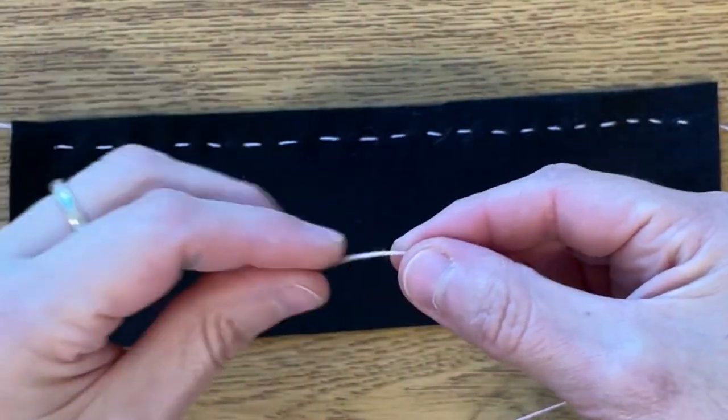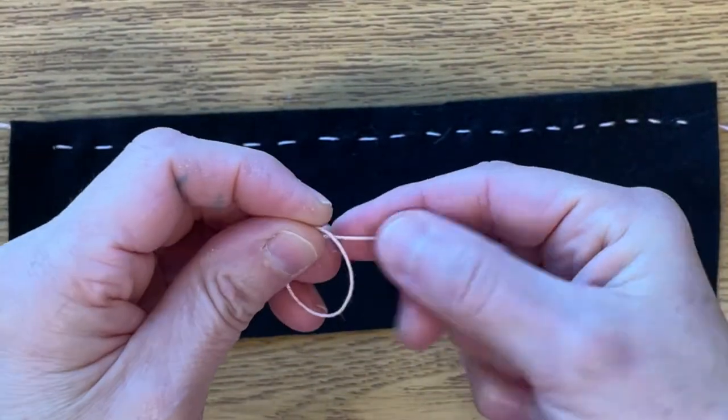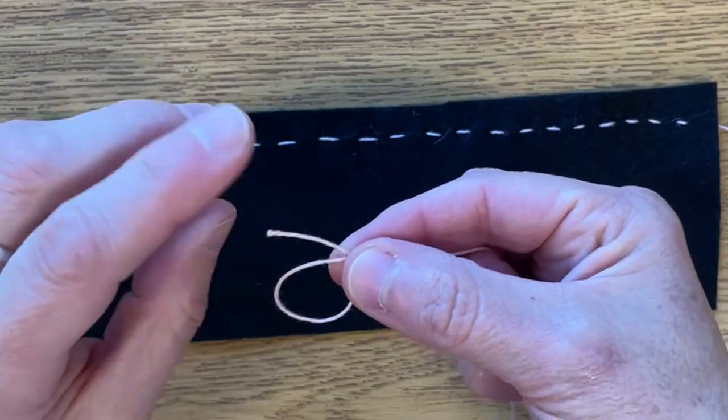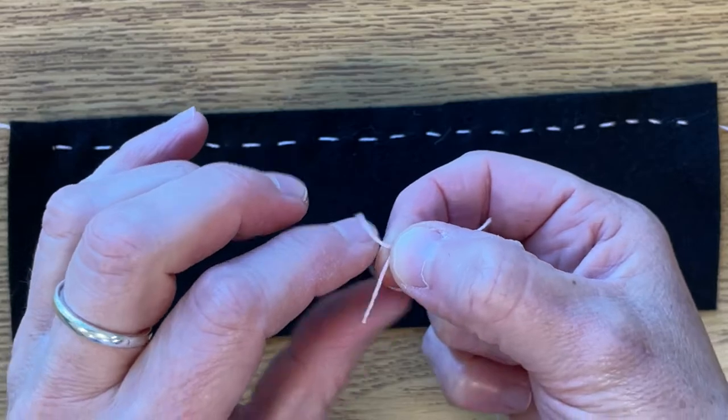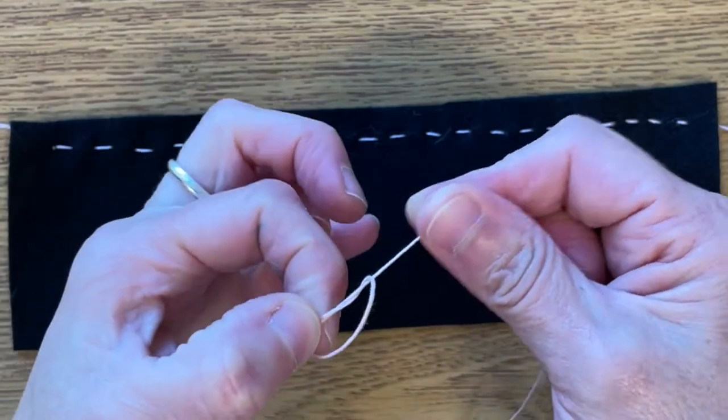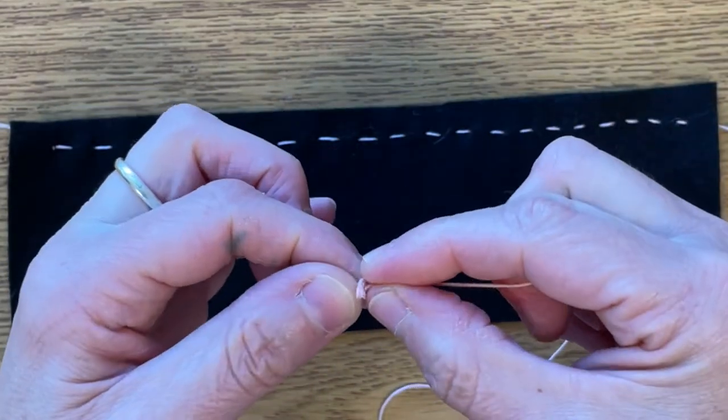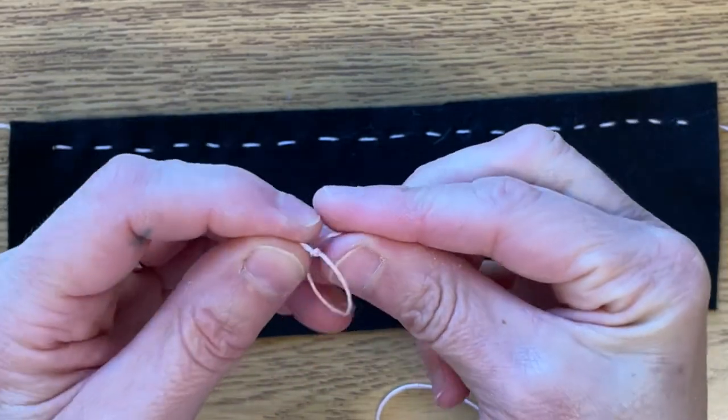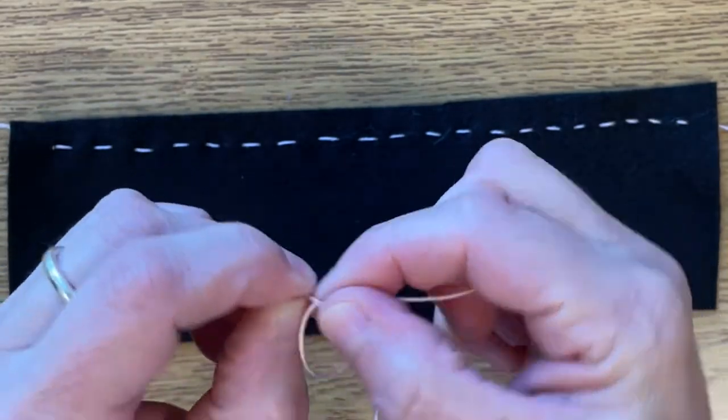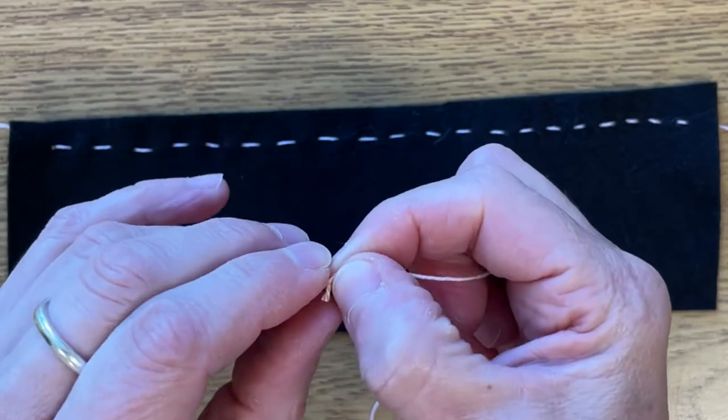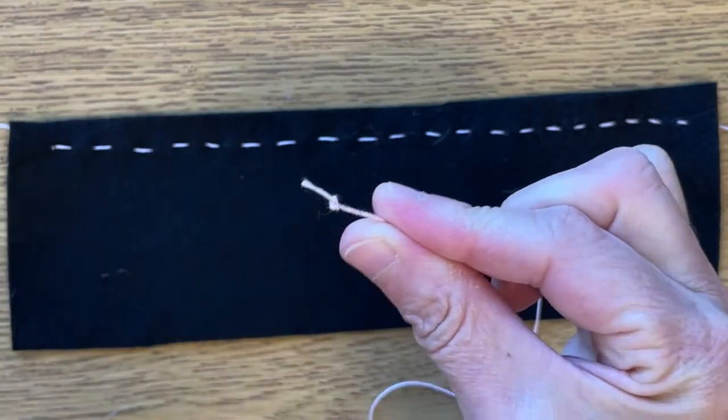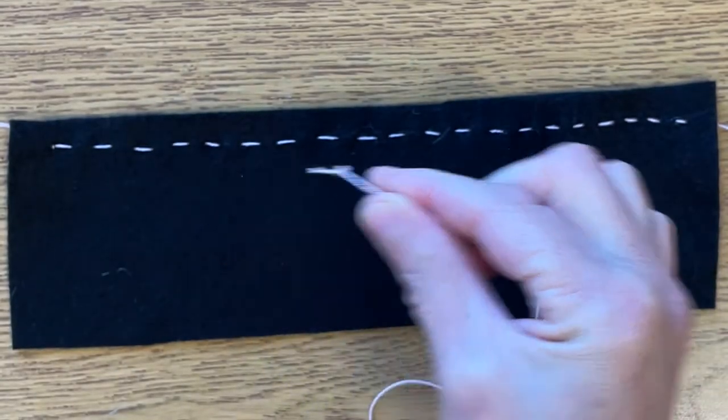The next type of stitch that we're going to be doing is called a whip stitch. So make a knot by making a loop, cross the ends over, put the end behind and through the hole, and pull. And you may want to make a double knot. So cross the ends over where the knot is and pull the end through the loop. Now you're ready to sew a whip stitch.